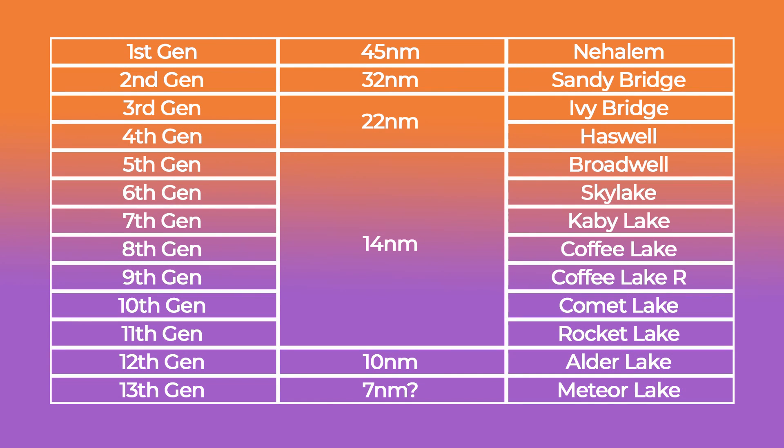Fifth generation Intel was Broadwell, a 14nm process node and a die shrink of Haswell. Sixth generation was Skylake, beginning the era of the lakes and coincidentally the end of Intel's tick-tock model. Seventh generation Kaby Lake was still on 14nm, while Intel promised 10nm chips were being developed — real 10nm chips that would provide significant performance over previous generations, but those promised chips seemingly never came.